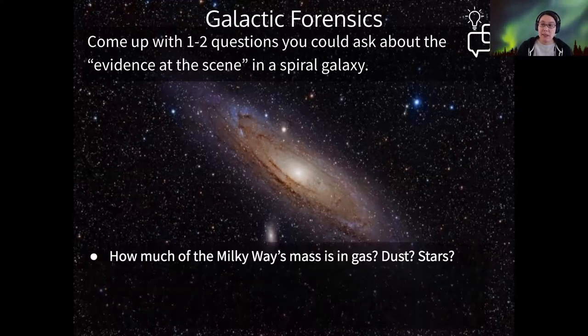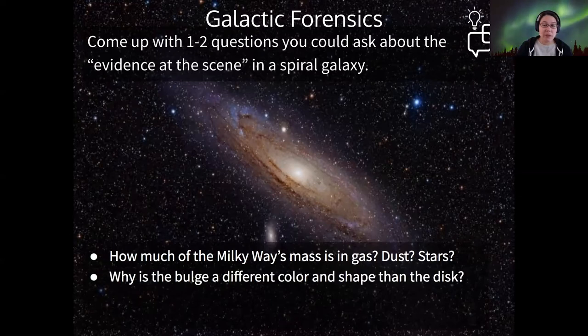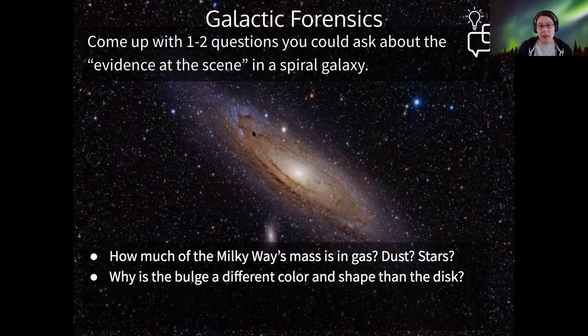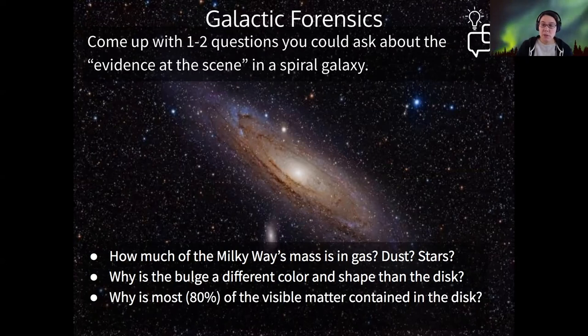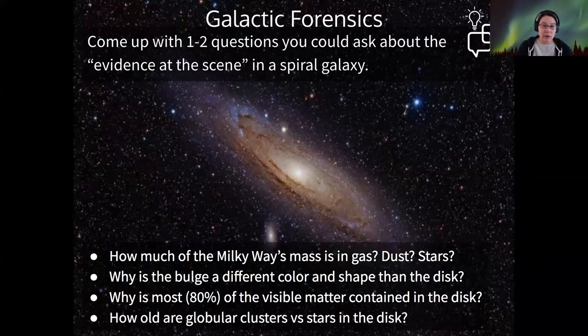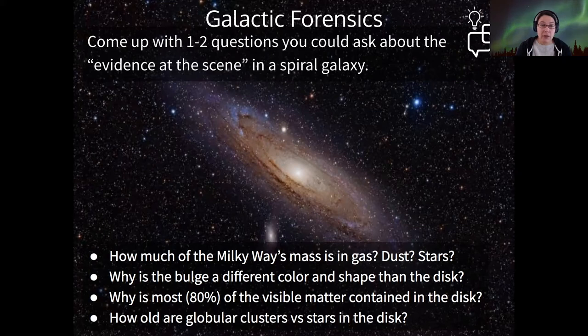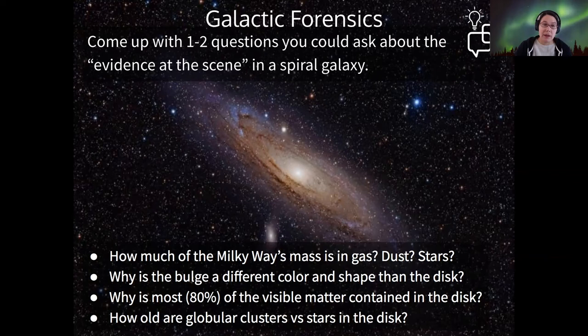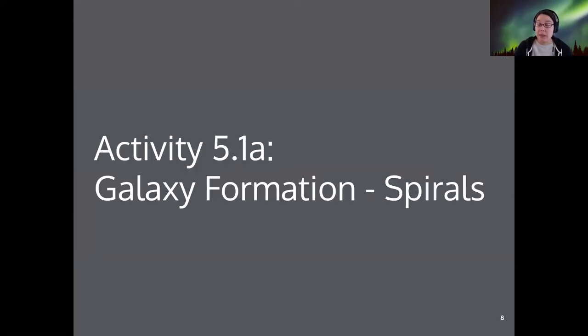Those are basically the same exact things I came up with, how much of the mass is distributed in different objects. Why is the bulge a different color? It looks to me like the bulge is more yellowish, and then the spiral arms, especially near the edge, look a lot bluer. Why is most of the visible matter in the disk, and that number is about 80% it turns out for Milky Way at least. And then also you could ask about the ages of different objects. So we can get at all of this information using what we learned from light, right? So that's been done. You've read about all the evidence.